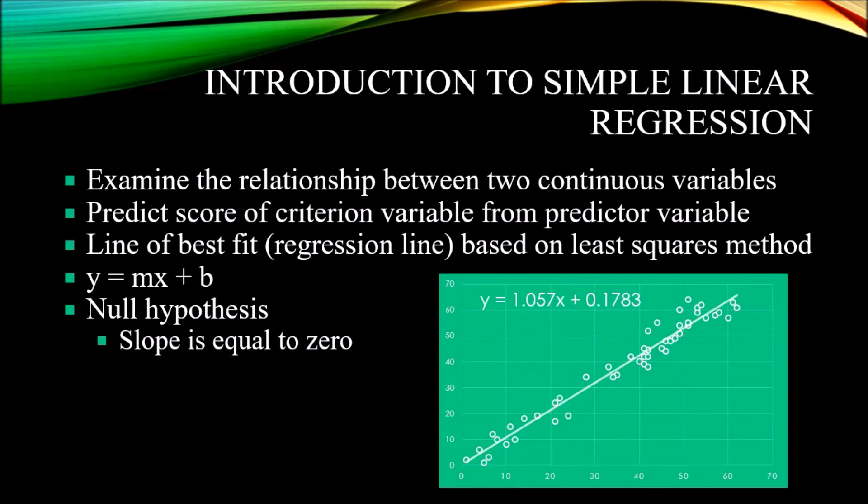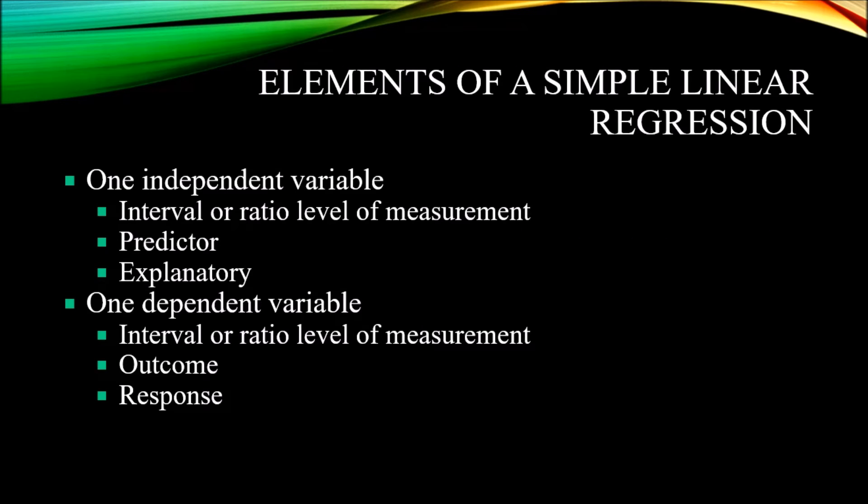The null hypothesis for a simple linear regression is that the slope, the value of m, is equal to zero. Now let's take a look at the elements of a simple linear regression. Well, it's fairly straightforward for linear regression. We have one independent variable measured at the continuous level of measurement. That's interval or ratio level of measurement.